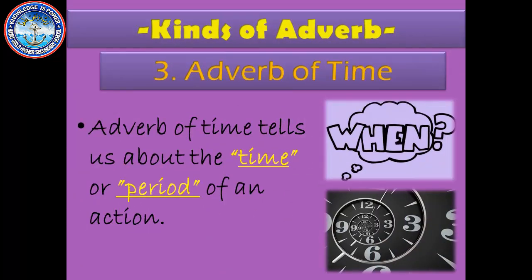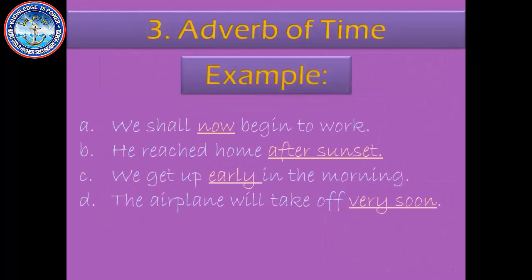The third kind of adverb is adverb of time. Adverb of time tells us about the time or period of an action. For example, 'We shall now begin to work.' When? Right now. So 'now' is an adverb of time. Second example: 'He reached home after sunset.' When did he reach home? After sunset. So 'after sunset' shows time.